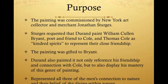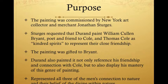The painting was commissioned by New York art collector and merchant Jonathan Sturges. Sturges requested that Durand paint William Cullen Bryant, poet and friend to Cole, and Thomas Cole as kindred spirits to represent their close friendship. The idea of kindred spirits was inspired by English poet John Keats' sonnet To Solitude. The painting was gifted to Bryant when finished, and Durand referenced his own friendship with Cole in it, representing all three men's connection to nature and their belief in the divine within nature — also known as Transcendentalism.